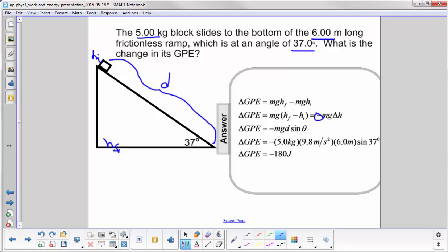Now does that make sense? It's always good to evaluate your answers. Yes, the negative sign means you lost or you transferred gravitational potential energy into another form. So its change would be negative. And that makes sense. You went from a high point to a low point.